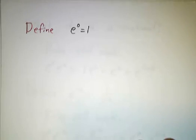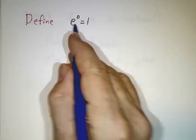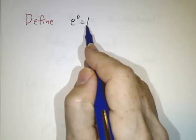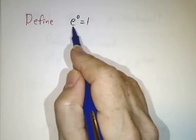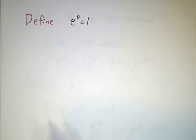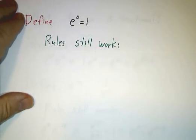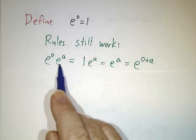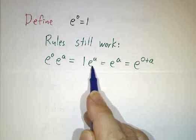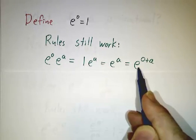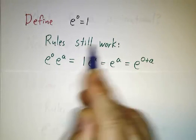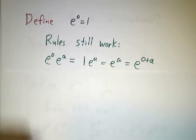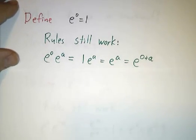So the first rule we're going to have is we're going to define e to the 0 is 1. This isn't written on stone tablets handed down from heaven. It's a definition we choose to make. e to the 0 is 1, and we discover that our rules still work. Because if you take e to the 0 times e to the a, well that's 1 times e to the a, and that's e to the a, and that's e to the 0 plus a. So it all makes sense. This is an extension of our rules that's consistent with the old definition.